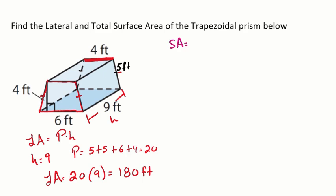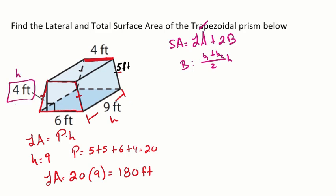Moving on to total surface area: it's lateral area plus two times the base area. The lateral area is 180 feet squared. For the base area, since it's a trapezoid, we use base one plus base two divided by two, times the height of the base. The height of the base is four, base one is four, and base two is six. Substituting in: four plus six divided by two, times four, gives a base area of 20.